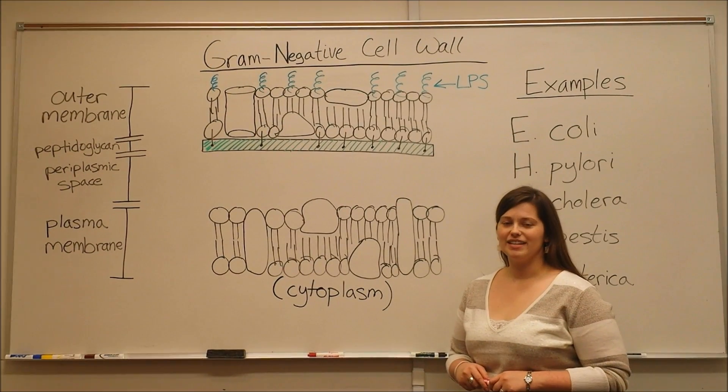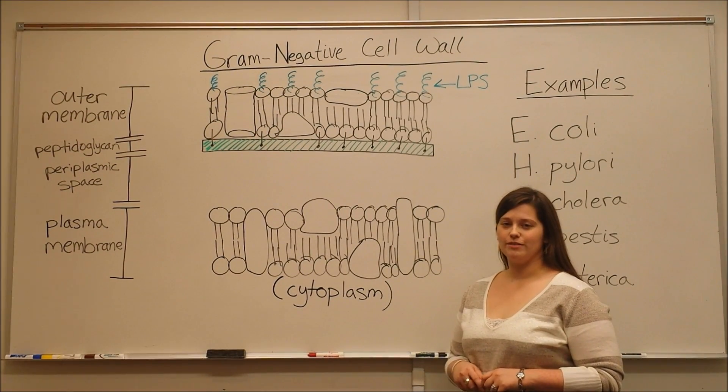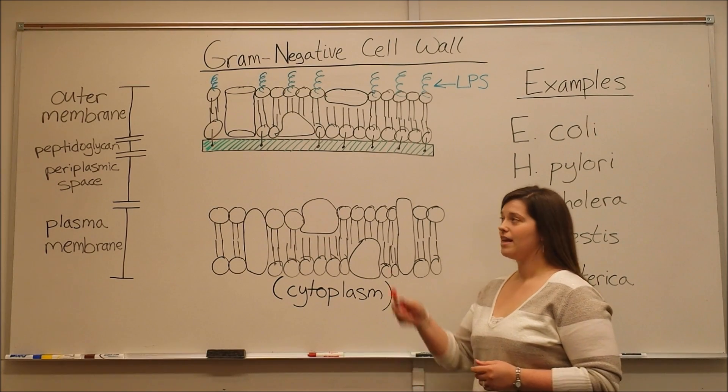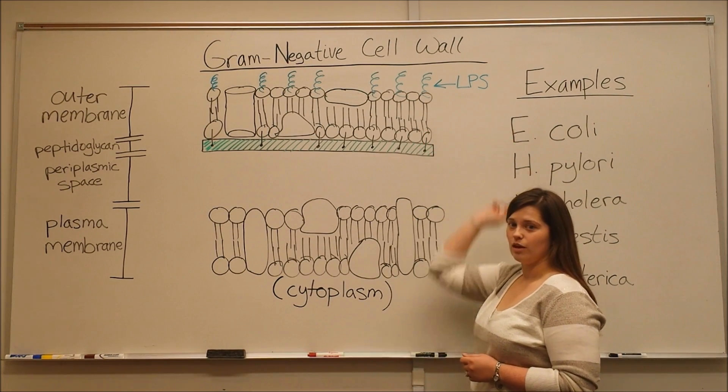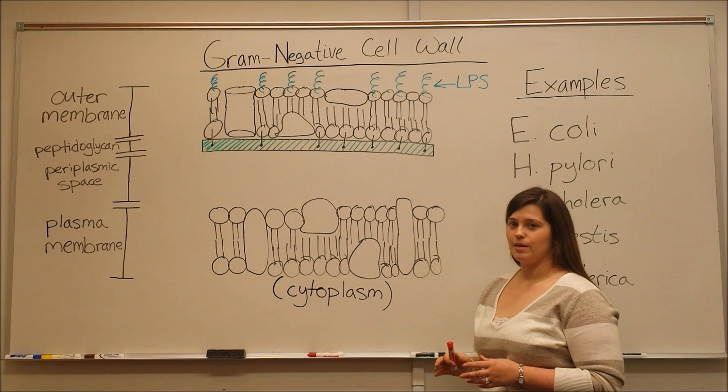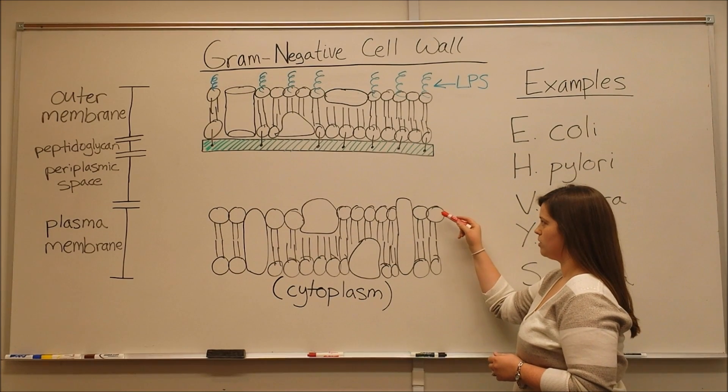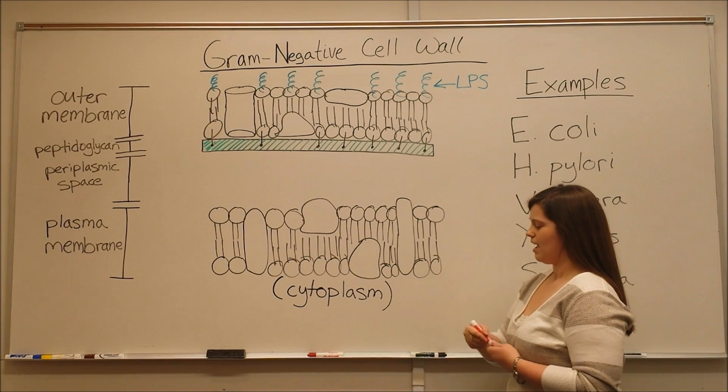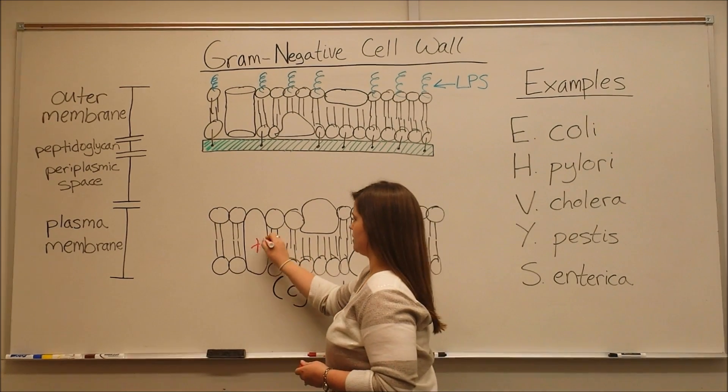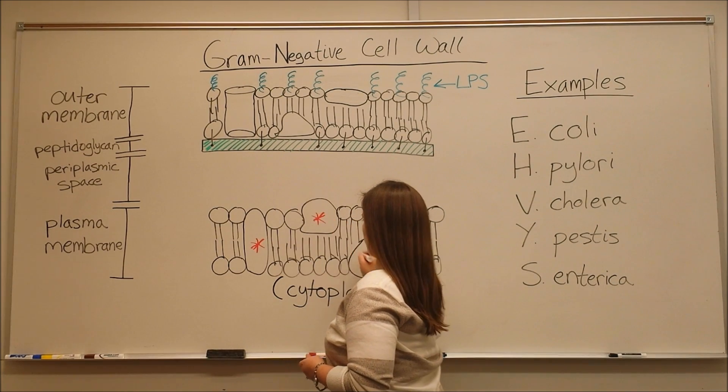So now we're going to continue our conversation about the difference between gram positive and gram negative cell walls. This time looking at the gram negative cell wall. We still see some of the same components. There's still a plasma membrane. It's still composed of a lipid bilayer. And it still contains proteins that I'll label here with an asterisk.